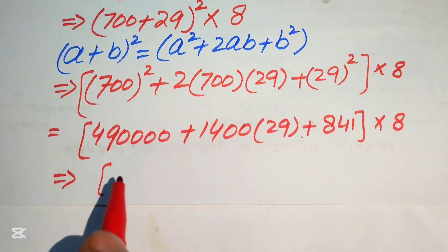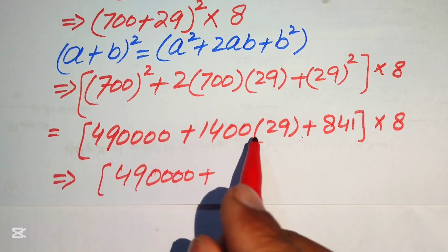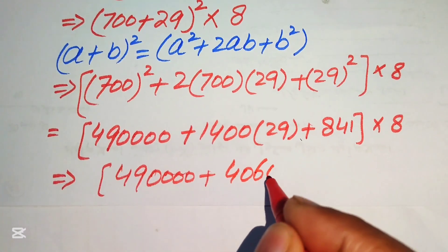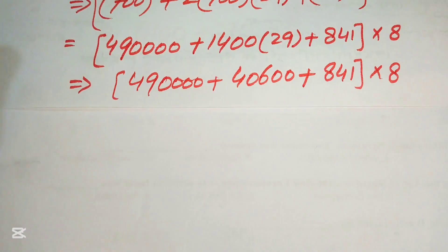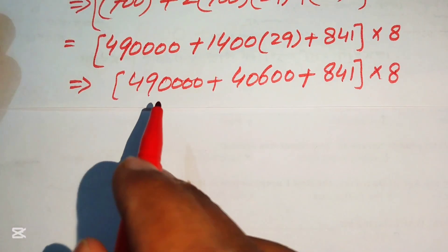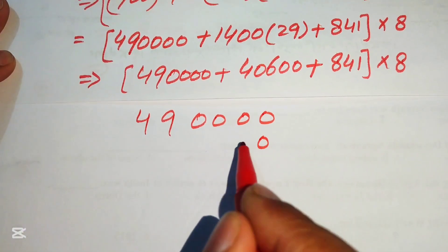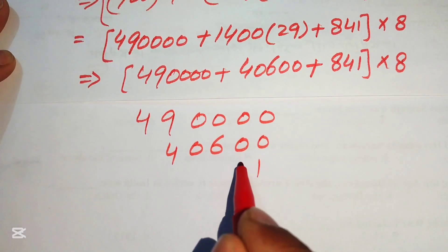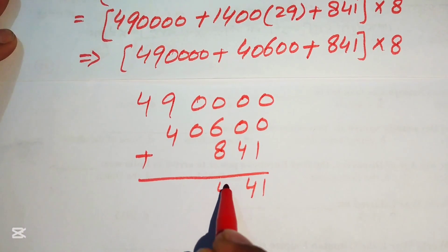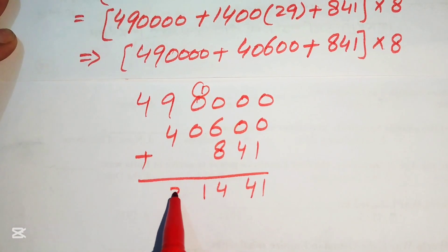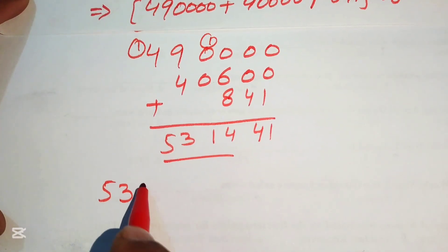Adding the three numbers: 490000 plus 40600 plus 841. Working through the addition step by step, we get 531441. This result is then multiplied by 8.